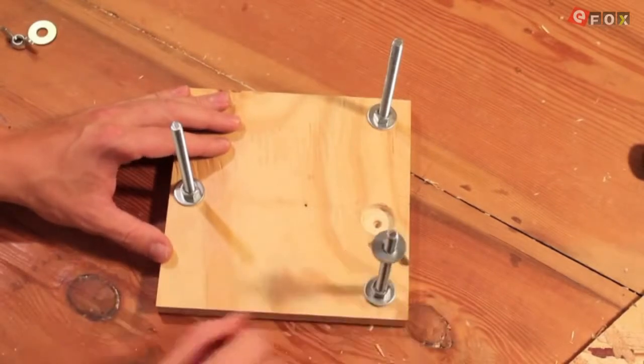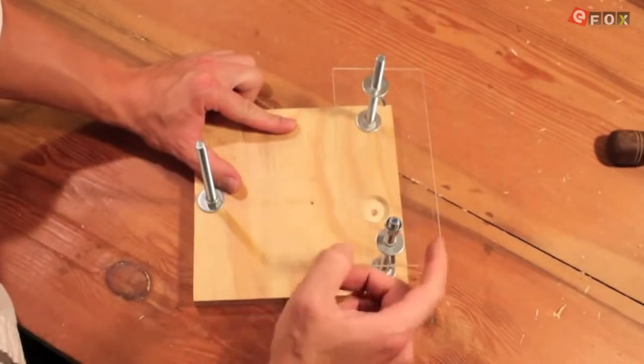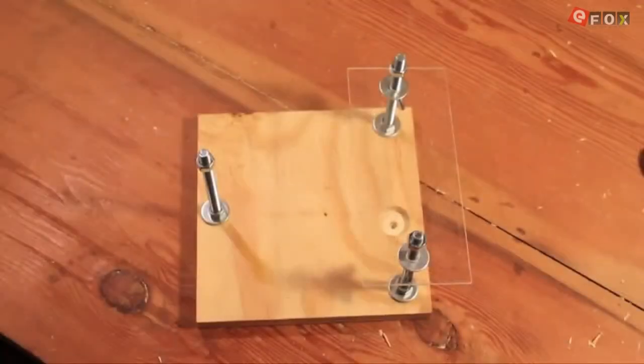Add the wing nuts and washers to the front 2 bolts. Next, add the specimen stage. Add a nut to each bolt and then place the camera stage on top.